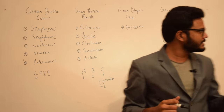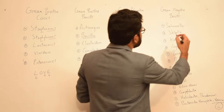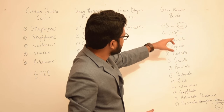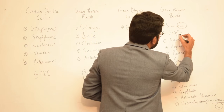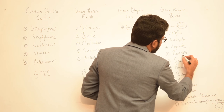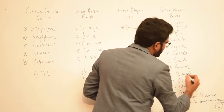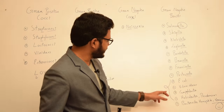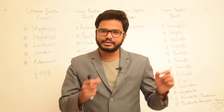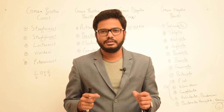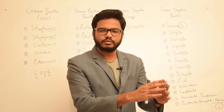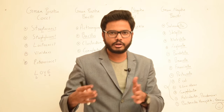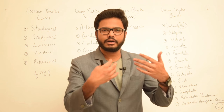For gram negative bacilli, it is very simple. Remember that most of these organisms have '-ella' at the end of the word: salmonella, shigella, klebsiella, legionella, bordetella, brucella, francisella, pasteurella — these are all included under gram negative bacilli. For the rest of the microorganisms, remember them in the following manner: imagine you have attended a camp or a medical camp, traveling in a helicopter or chopper.